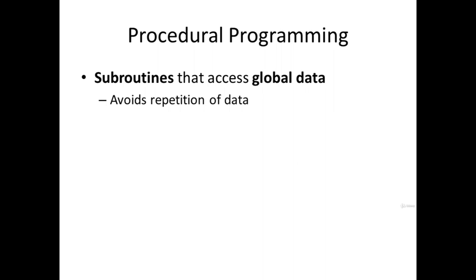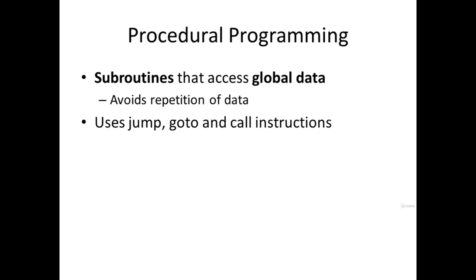Procedural programming still uses jump, go-to, and call instructions, where call instructions are added for sub-routines. These sub-routines are different from functions. Sub-routines are similar to functions but they do not return a value, whereas a function may or may not return a value. Procedural programming supports sub-routines which cannot return a value.